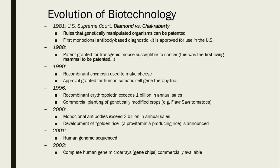Further down the evolution of biotechnology — this is still about 20 years ago. There is more of a legal aspect: as more biologics were being produced, they established that genetically manipulated organisms can be patented. This gave companies more incentive to spend resources investigating genetically manipulated organisms so they could profit from them. Further down are some hallmarks of certain recombinant protein milestones in history — again, these are just FYI, I won't ask you about them in detail.